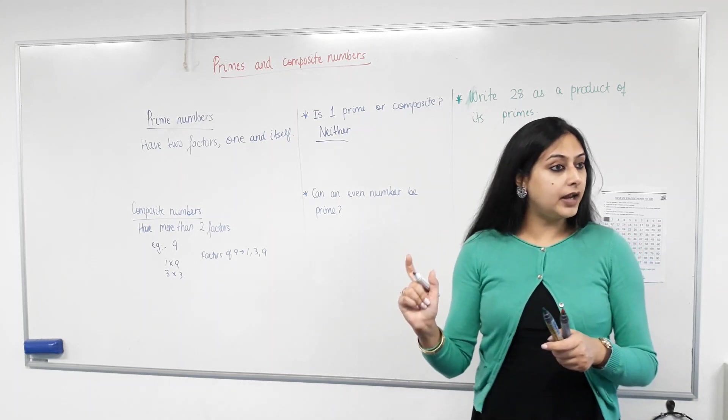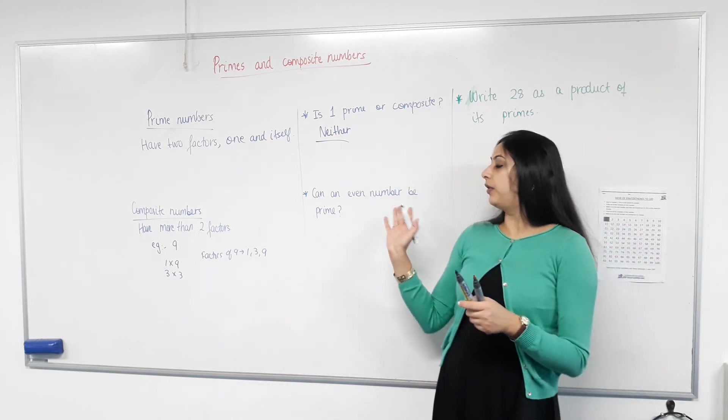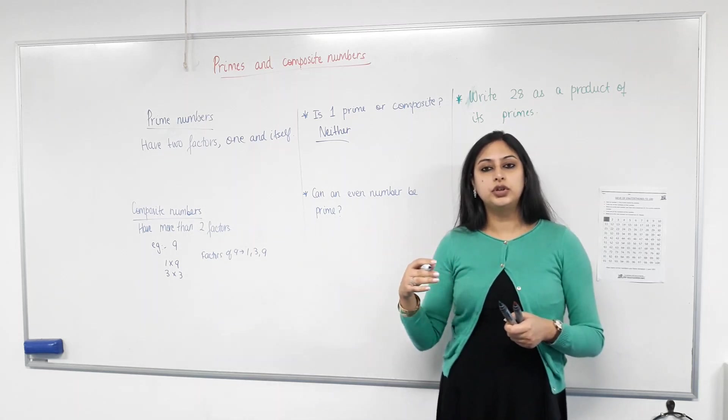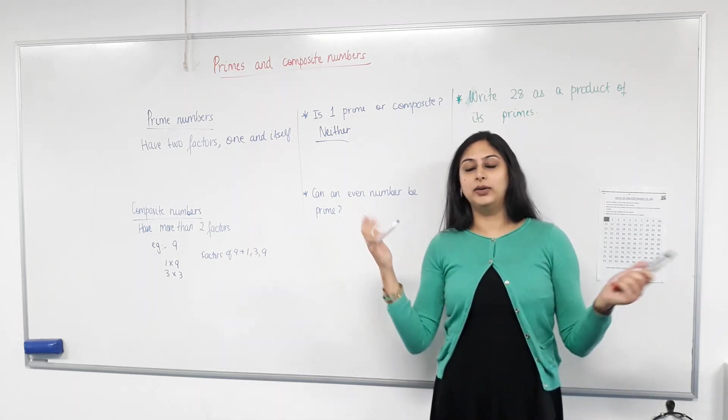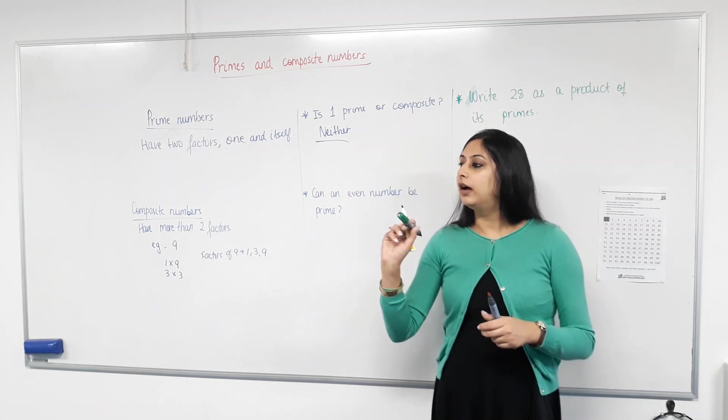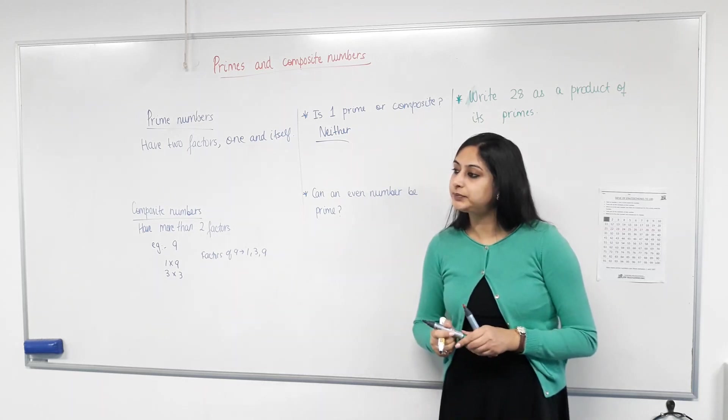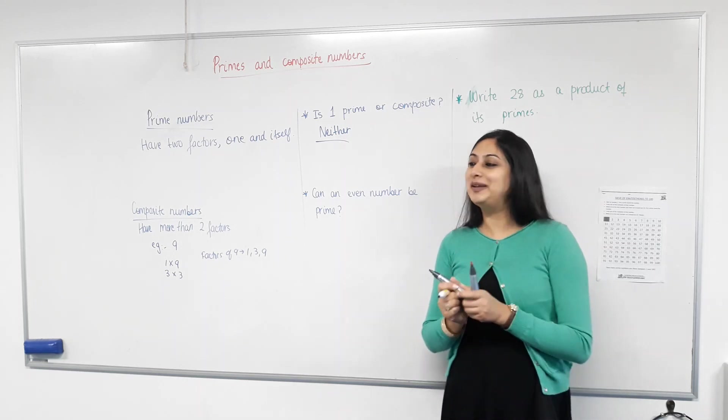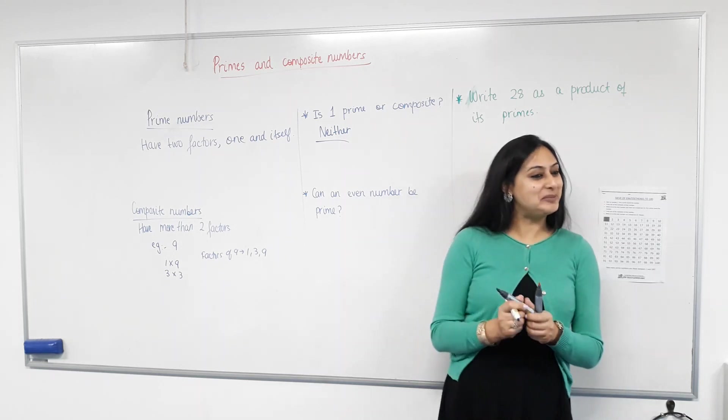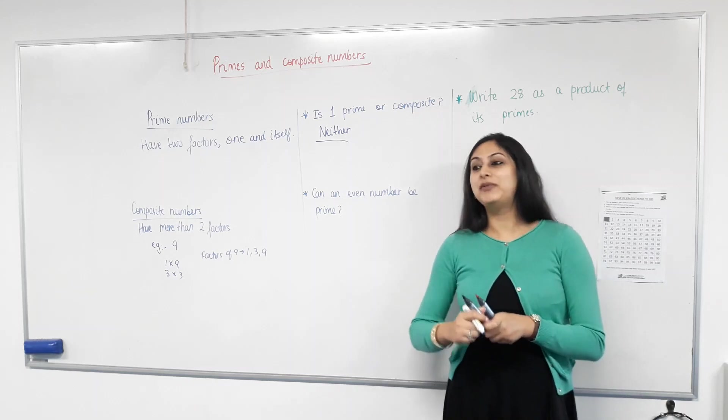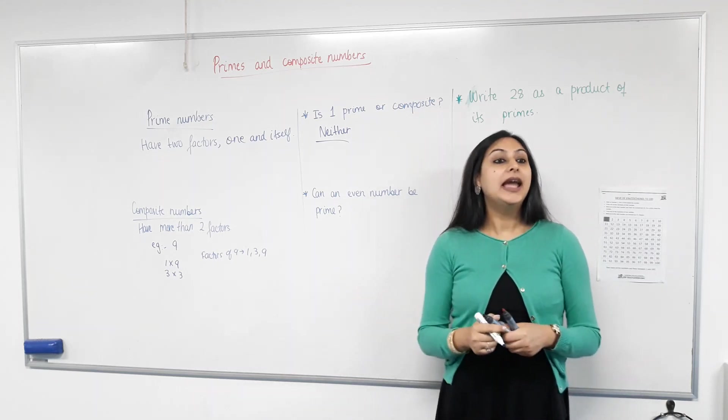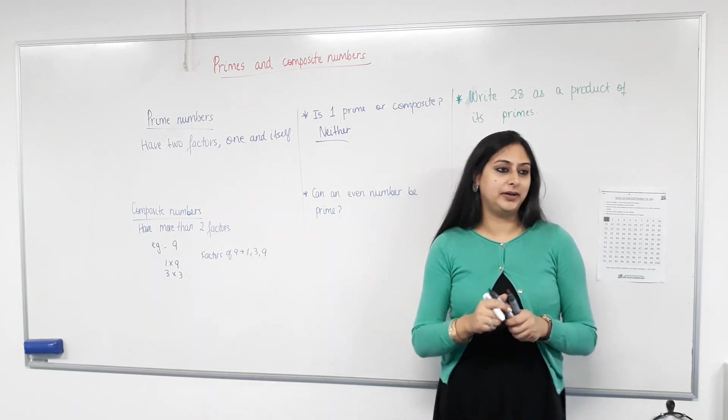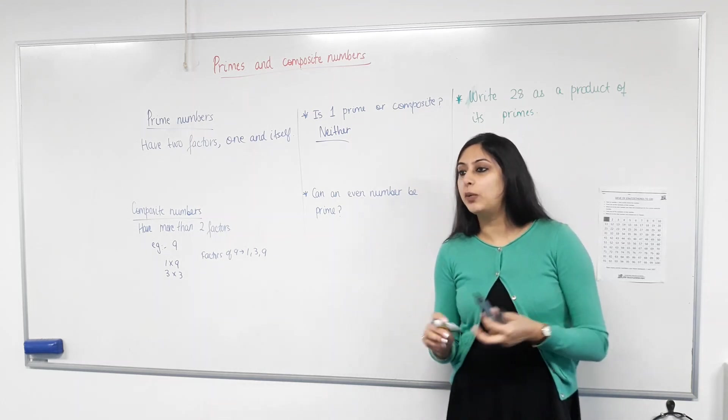Now. Can an even number be a prime number? Think carefully. I just said think. I didn't say say it out loud. Can an even number be a prime number? No. Okay. Is two a prime number? Yes. Is two an even number? Yes. So, can an even number be a prime number? Yes. Let's see why.